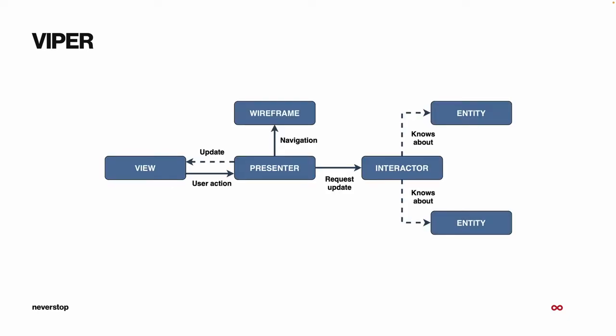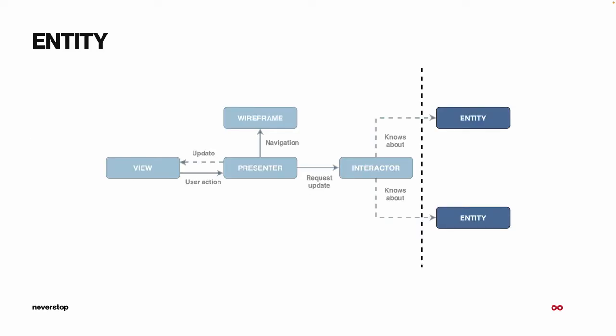Here's a quick overview of what our basic Viper architecture looks like, bearing in mind that we've replaced the R for Router with W for Wireframe in our implementation, because it fits iOS development better. The entity is located on the rightmost side of the diagram. Entities are self-contained pieces of code containing domain logic, properly separated from the rest of the Viper module so they can be reused — switched around, shared between projects or other Viper modules.